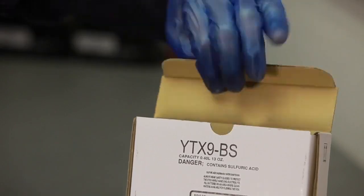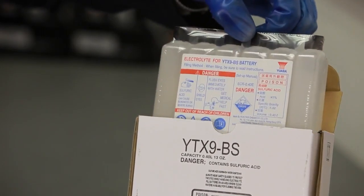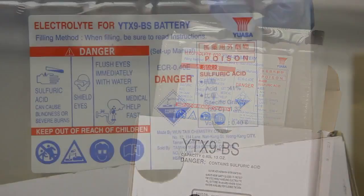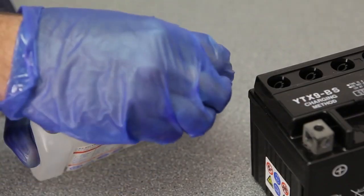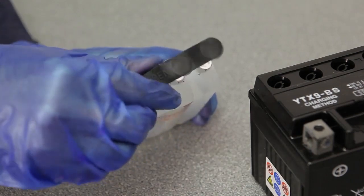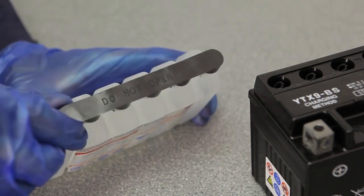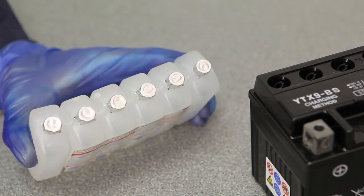Only use the container that comes with the battery, as it contains the proper type and exact amount of electrolyte for this specific battery. Detach the cap strip from the container and put it to one side. This will be used to seal the battery when charging is complete.